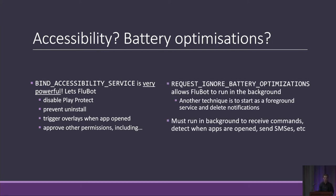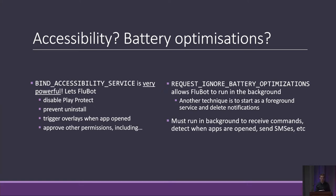The accessibility service also lets Flubot automatically approve some other permissions, including Request Ignore Battery Optimisations, which is crucial because it means Flubot can run in the background. Most mobile phones suspend apps when you're not using them to save battery. But some apps need to run in the background — like your music player. Flubot does this by ignoring battery optimisations. It wants to run in the background because that's where it does all its work: sitting, listening, waiting for you to open a banking app, waiting for commands from control servers, and sending out text messages to other people.